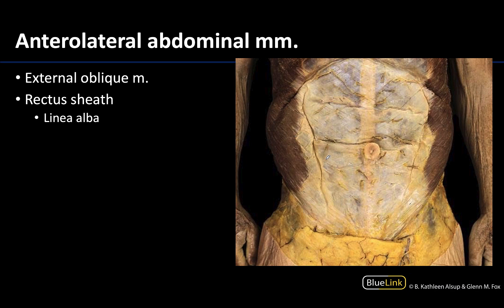Looking at an anterior view where the subcutaneous tissue has been mostly removed, you can see the external oblique in this particular dissection. We have not gone deeper, so the internal oblique as well as the transversus abdominis are occluded from view because we are only looking superficially.